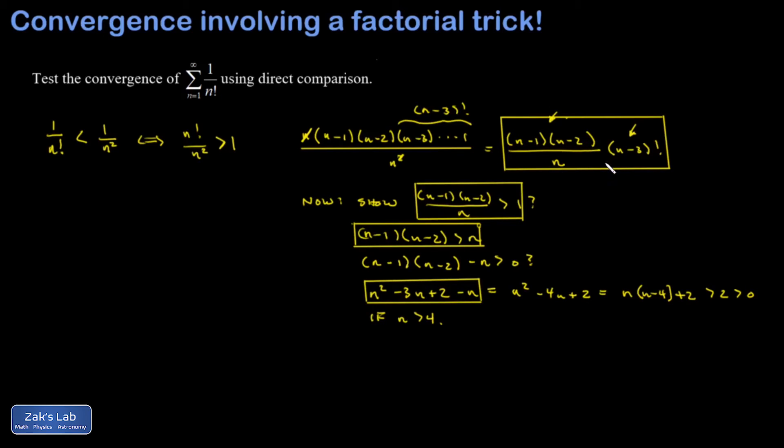Which means this expression has to be bigger than 1. And that was nothing more than n factorial over n squared being bigger than 1, which then shows 1 over n factorial is less than 1 over n squared.